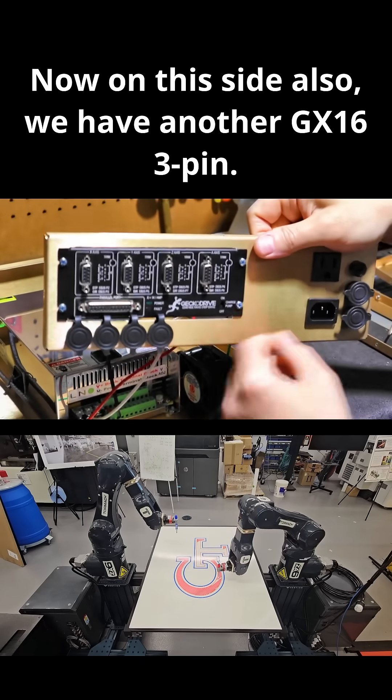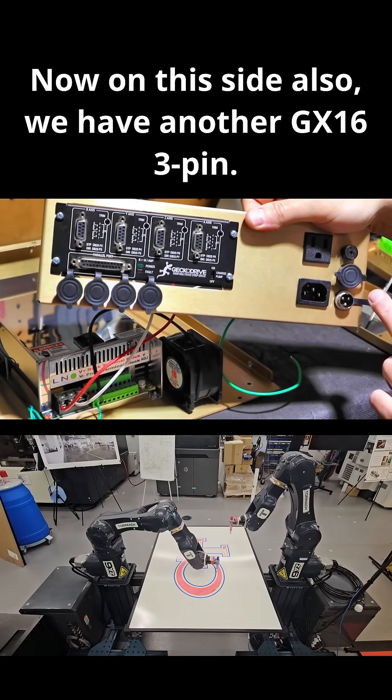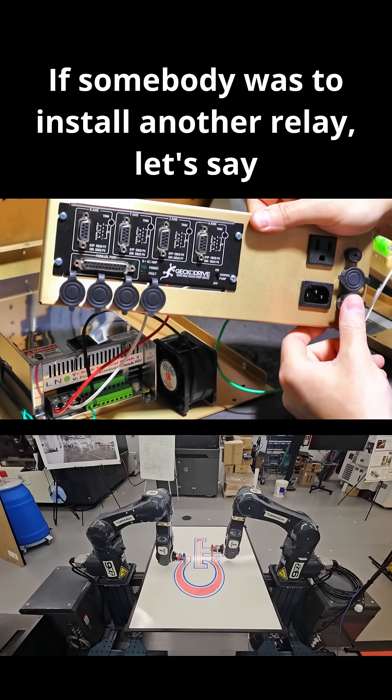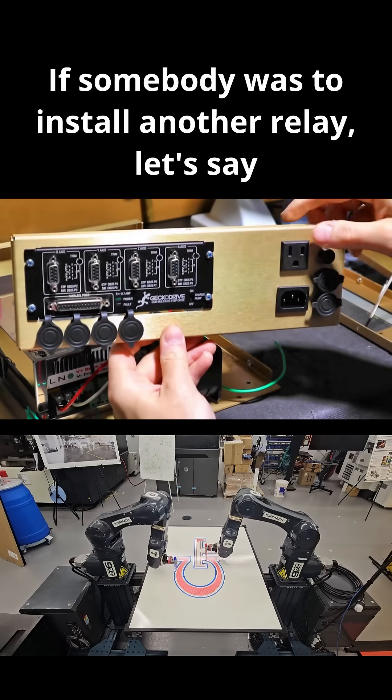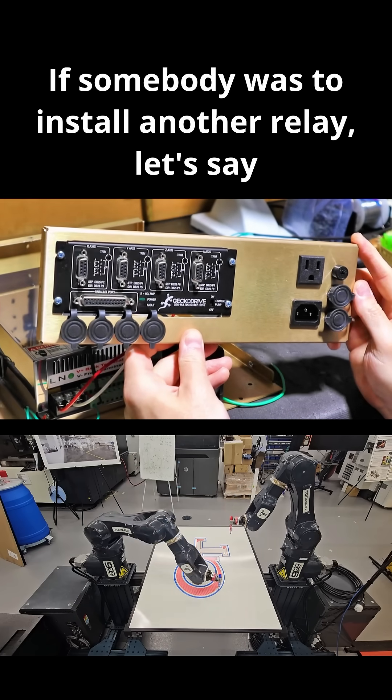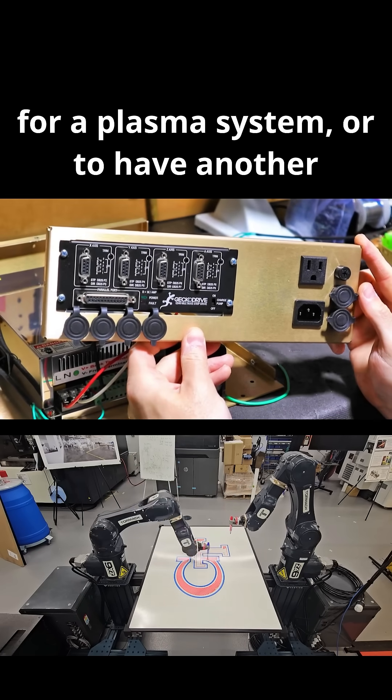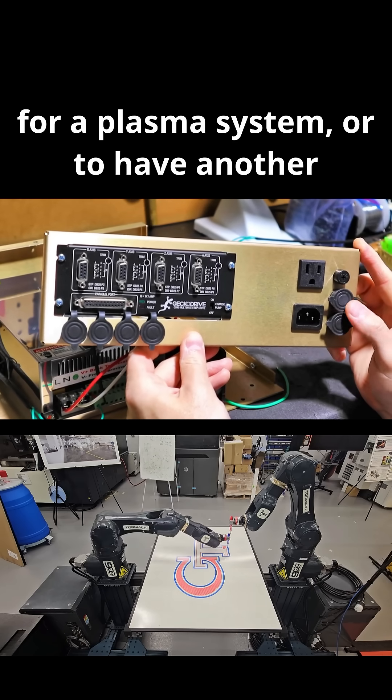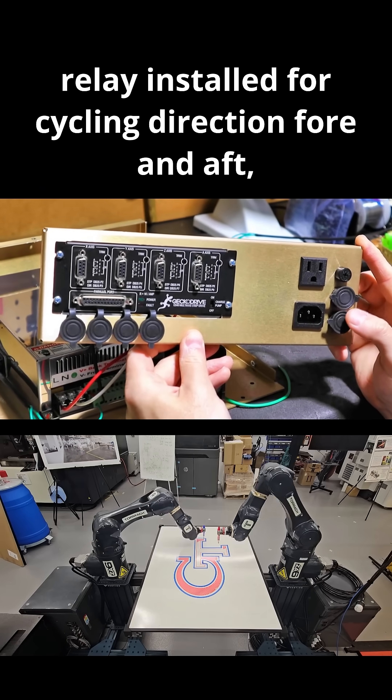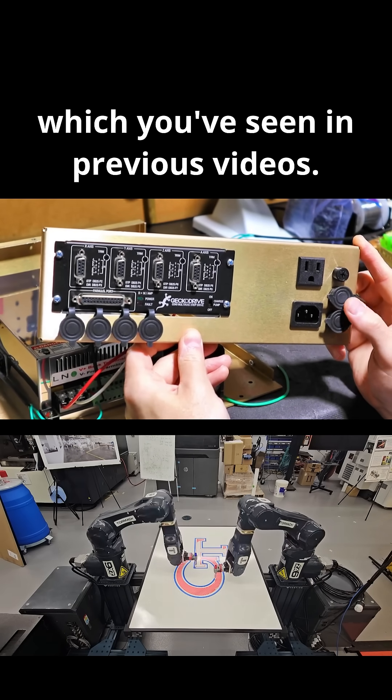Now, on this side also, we have another GX-16 3-pin. If somebody was to install another relay, let's say for a plasma system, or to have another relay installed for cycling direction forward and aft, which you've seen in previous videos.